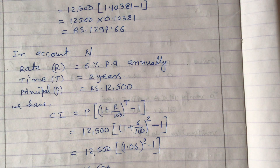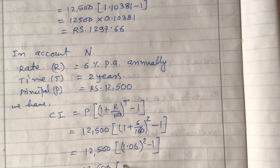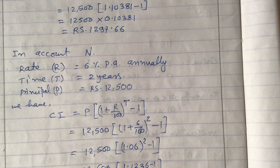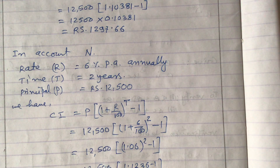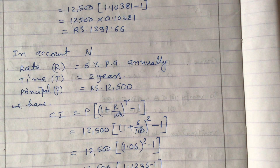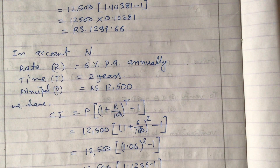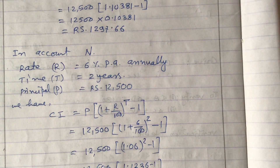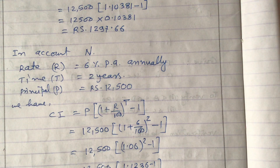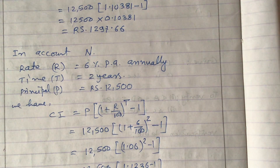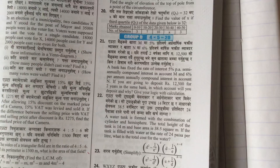Using a calculator: (1.06)^2 = 1.1236. So CI = 12,500 × (1.1236 − 1) = 12,500 × 0.1236 = rupees 1,545. That is the compound interest earned in account N.